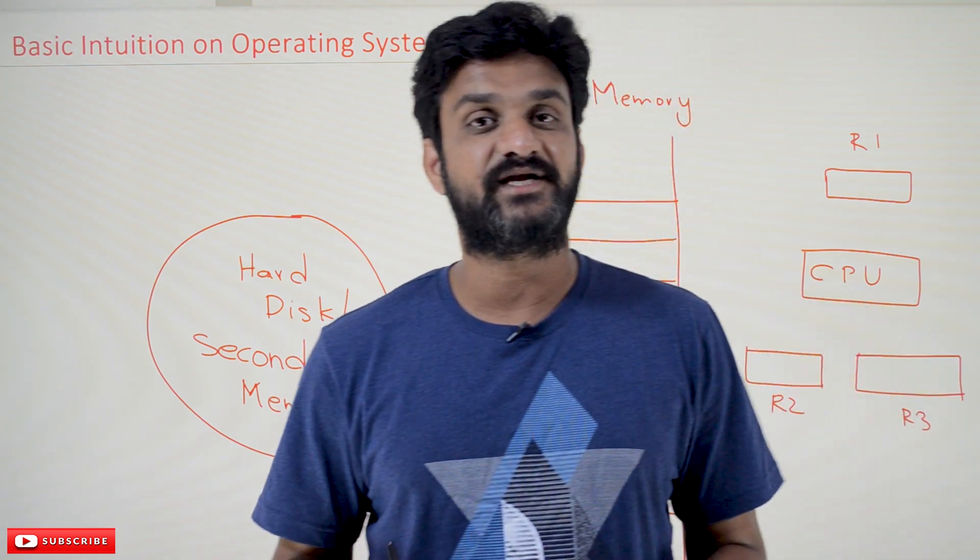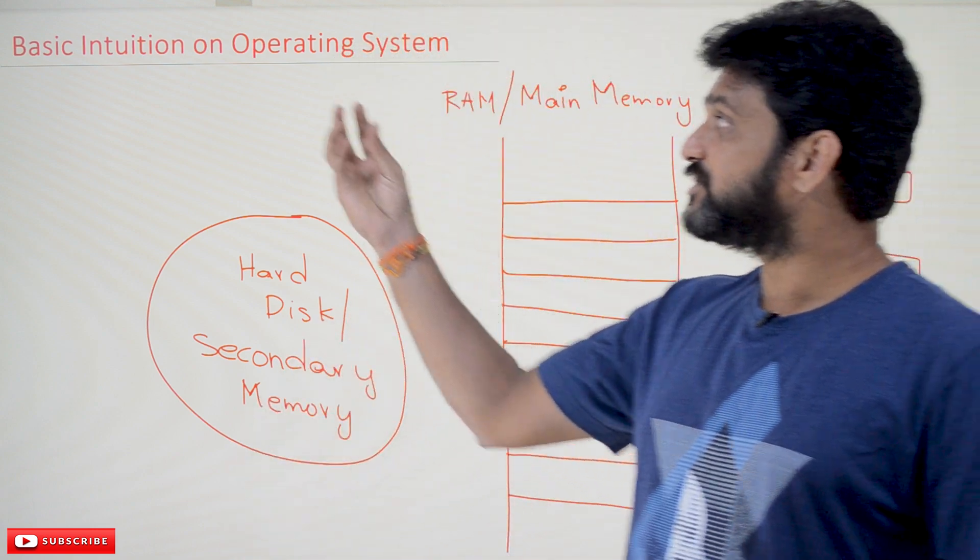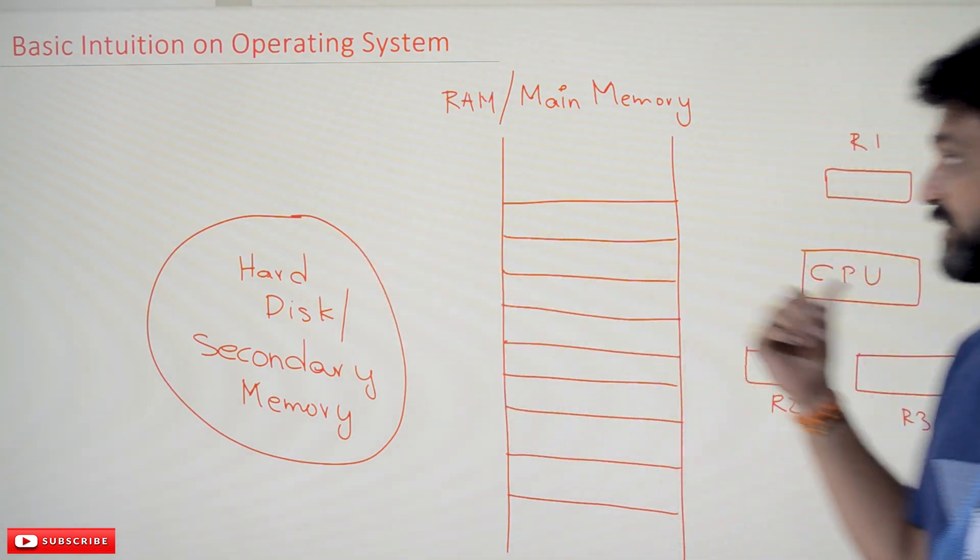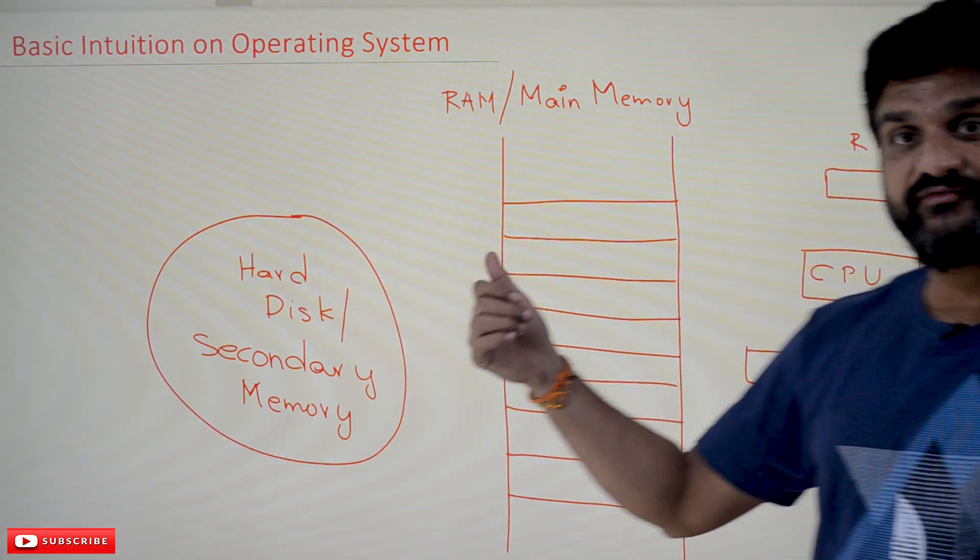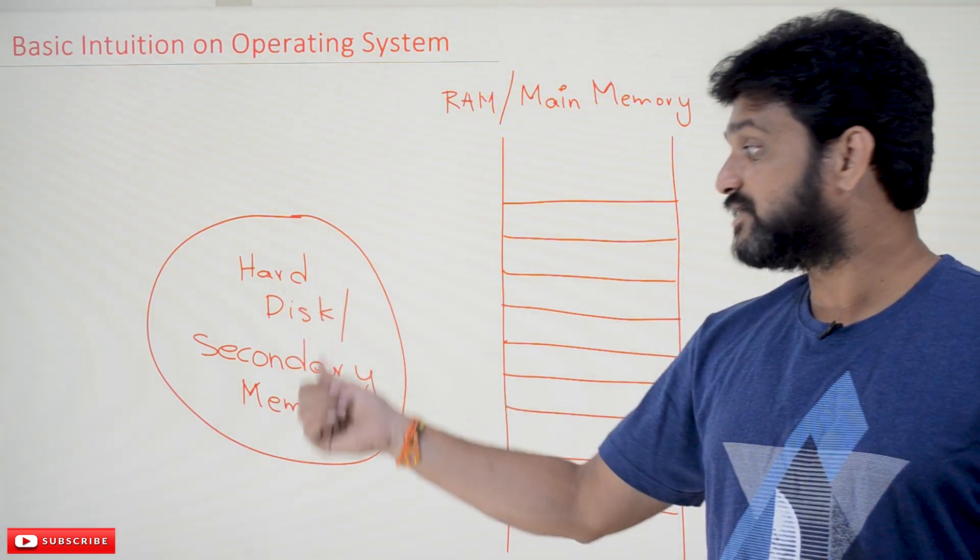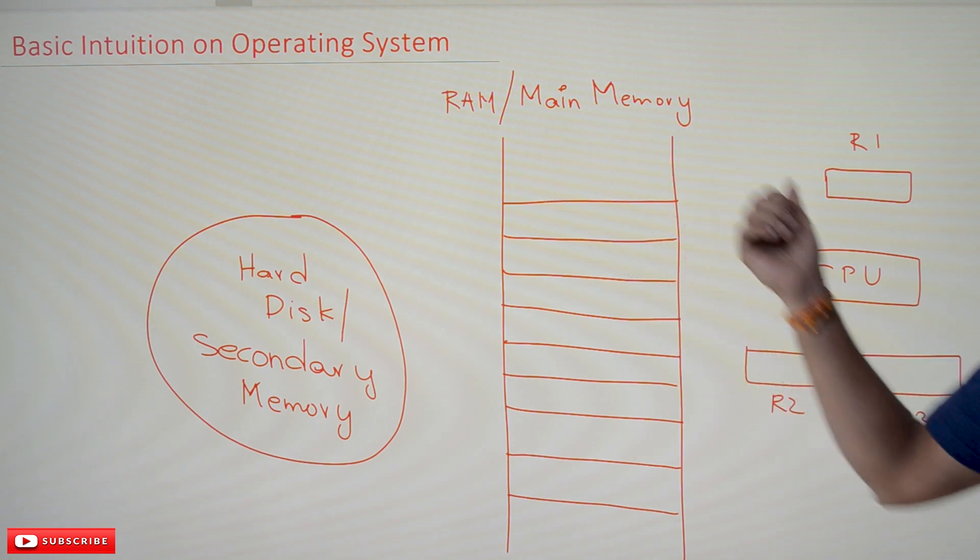Now let's try to understand a basic intuition on operating system. To understand that intuition we will consider this diagram. In this diagram we are having three very important components of a computer which is hard disk or secondary memory, and this is our RAM or main memory, and this is a CPU with three general purpose registers.